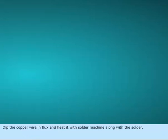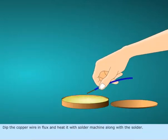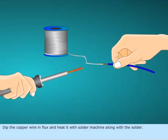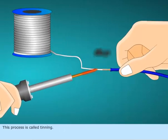Dip the copper wire in flux and heat it with solder machine along with the solder. This process is called tinning.